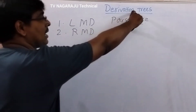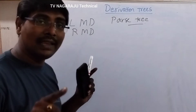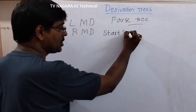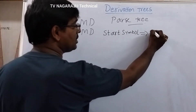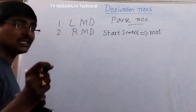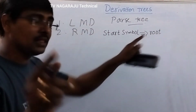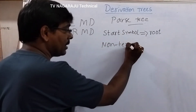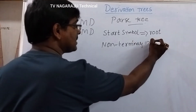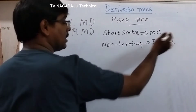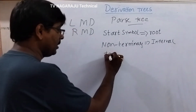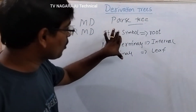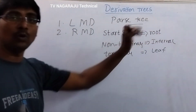One more thing is the concept of derivation tree — how a tree is represented. In simple terms, the start symbol of the production acts as the root node in a derivation tree. Other than the start symbol, the non-terminals act as internal nodes, and terminals act as leaf nodes. This is the procedure. So the production is converted into tree format by following this rule.